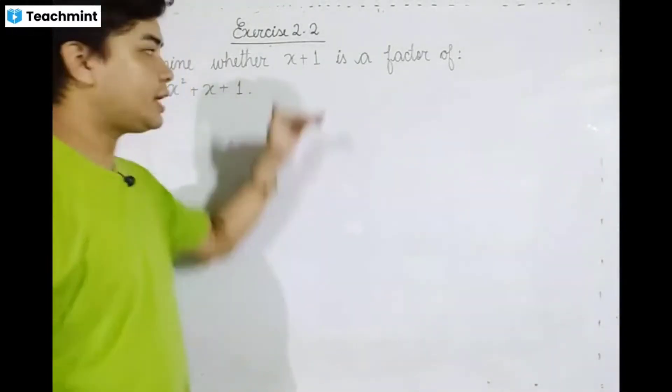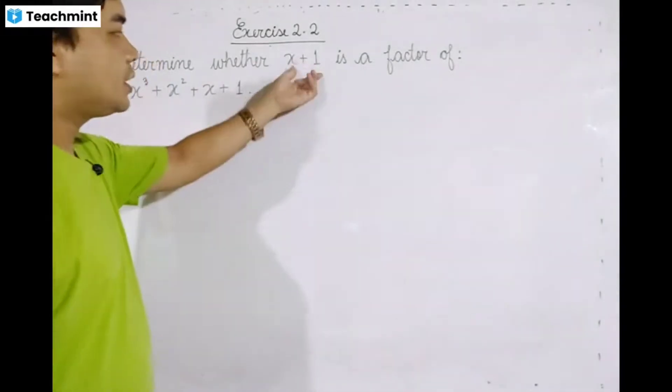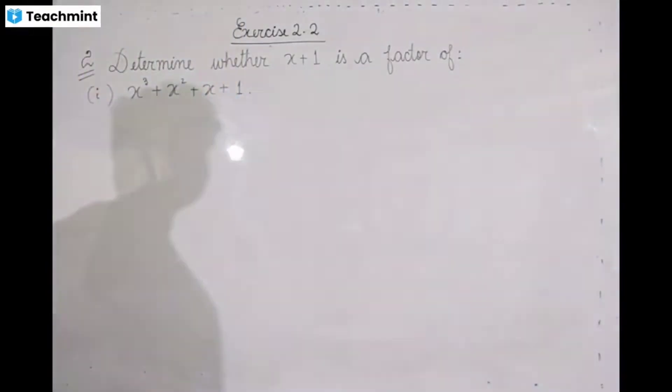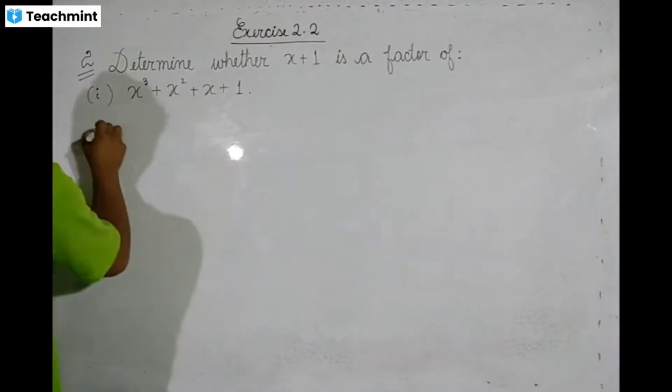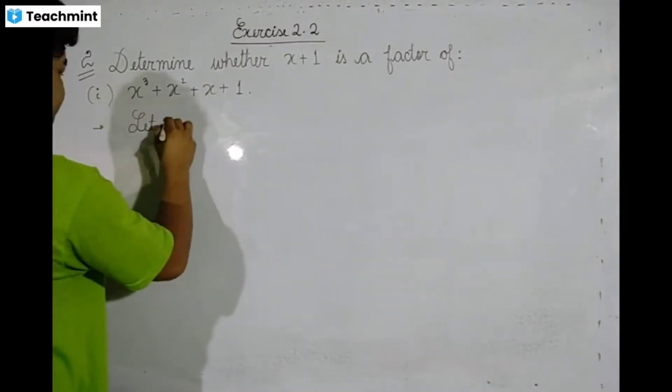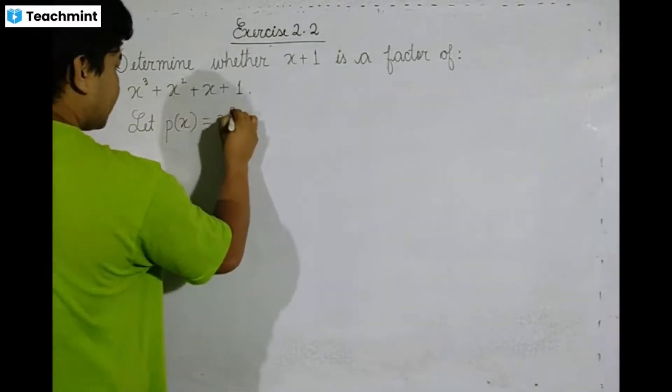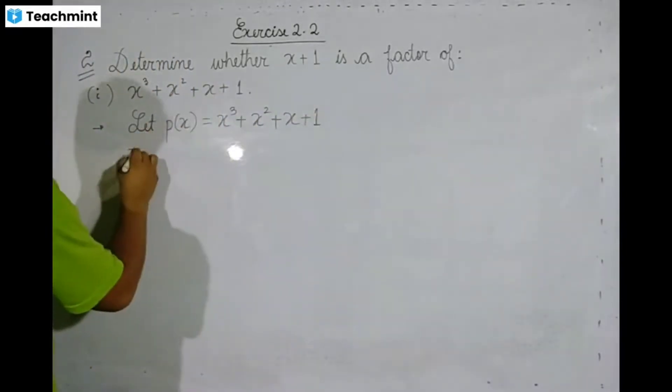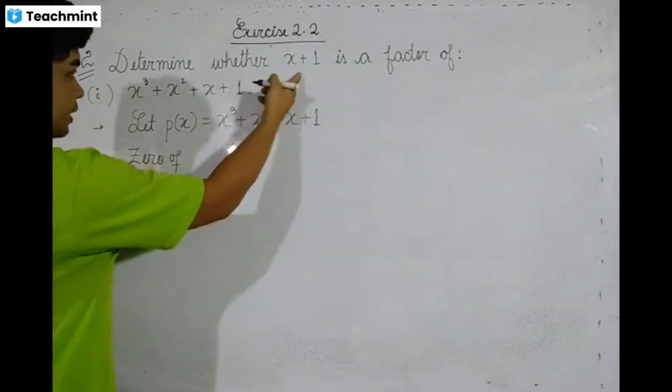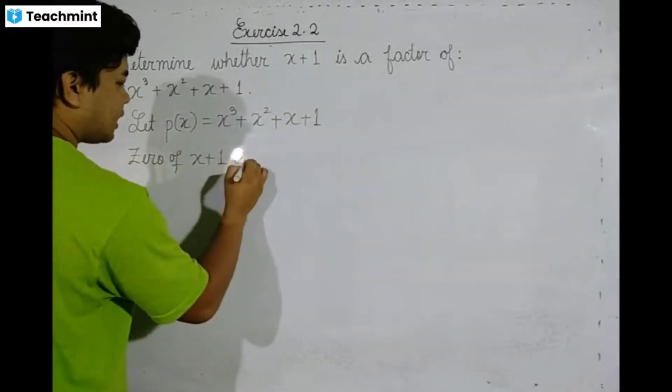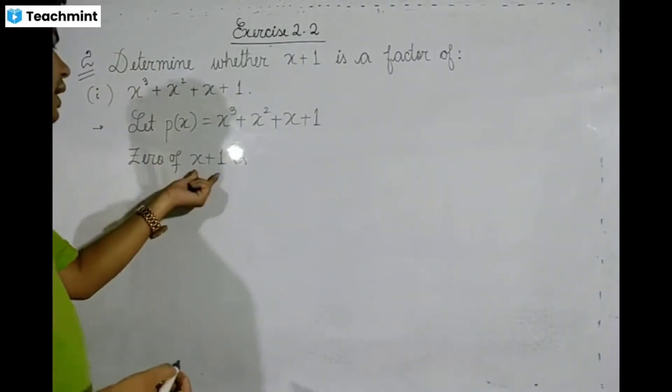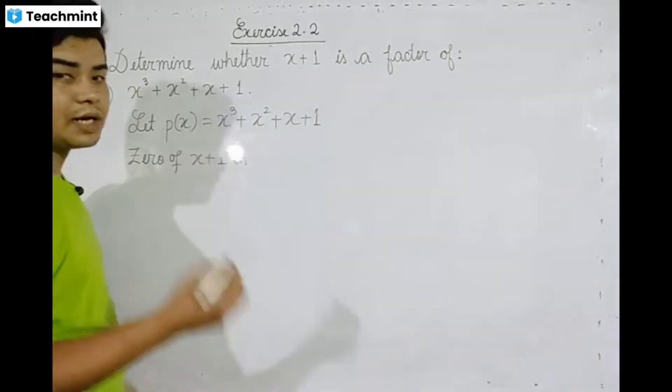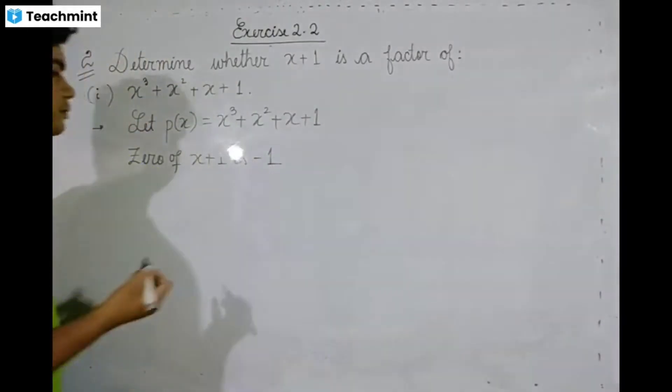To check if x plus 1 is a factor, let p of x equal x cube plus x square plus x plus 1. We need to find the value when x plus 1 equals zero. If x plus 1 equals 0, then x equals minus 1.